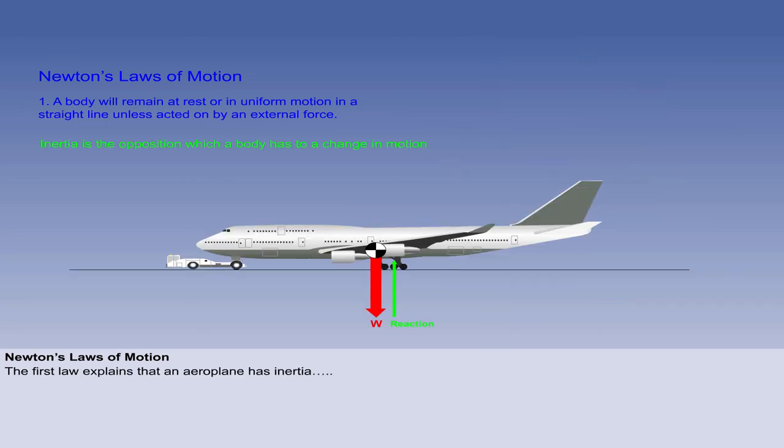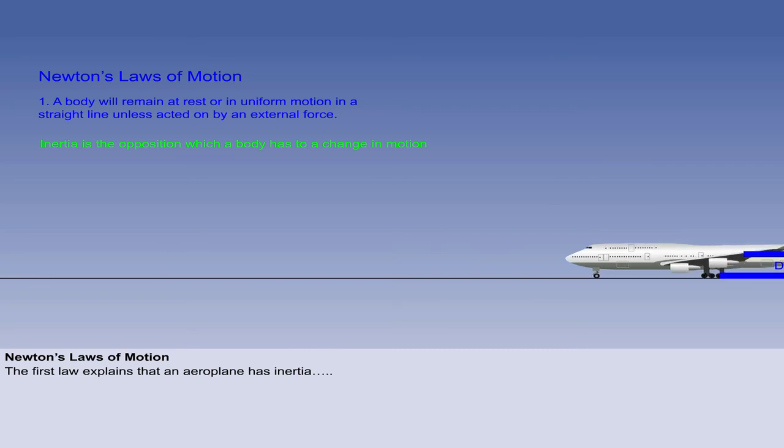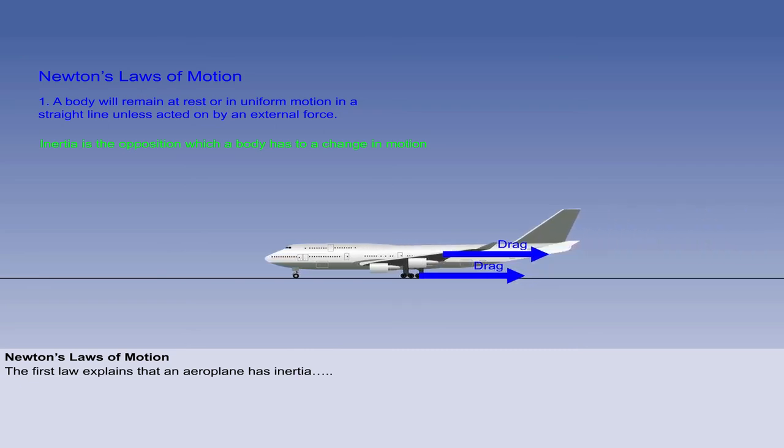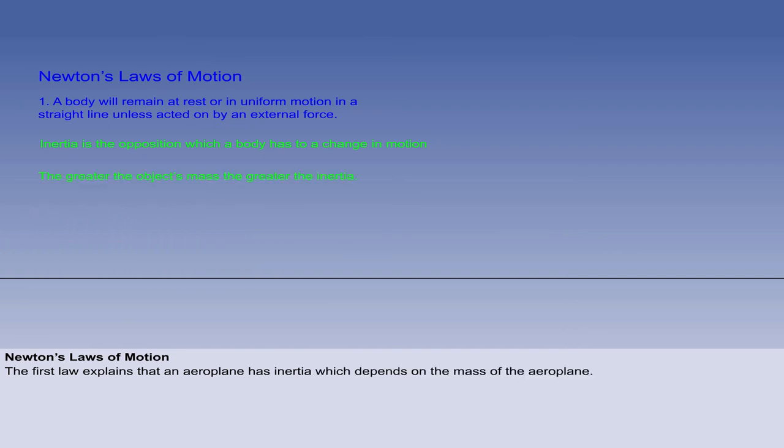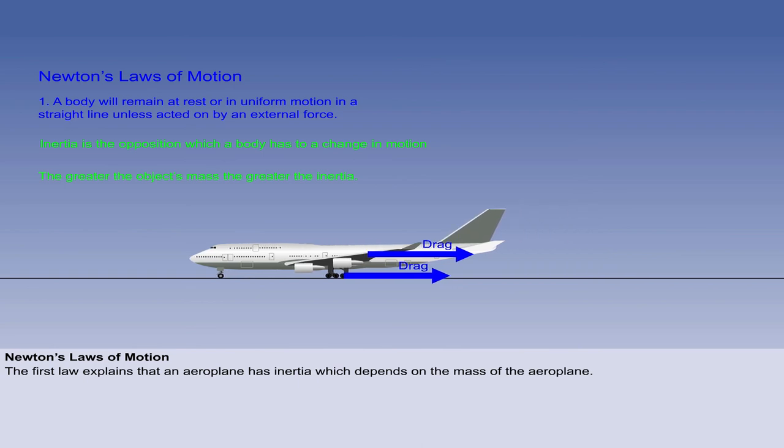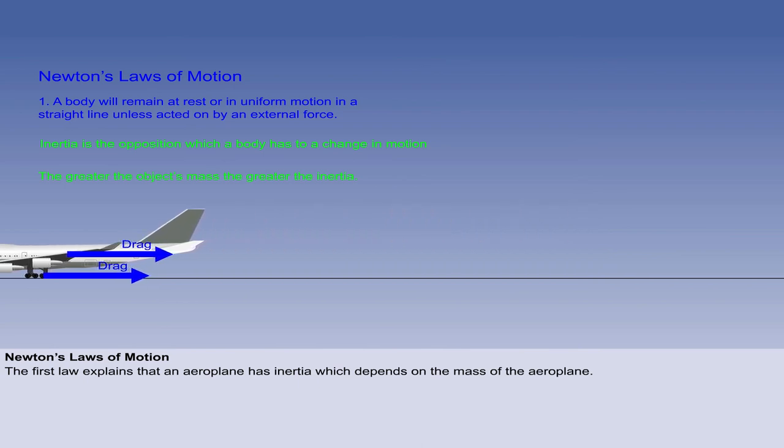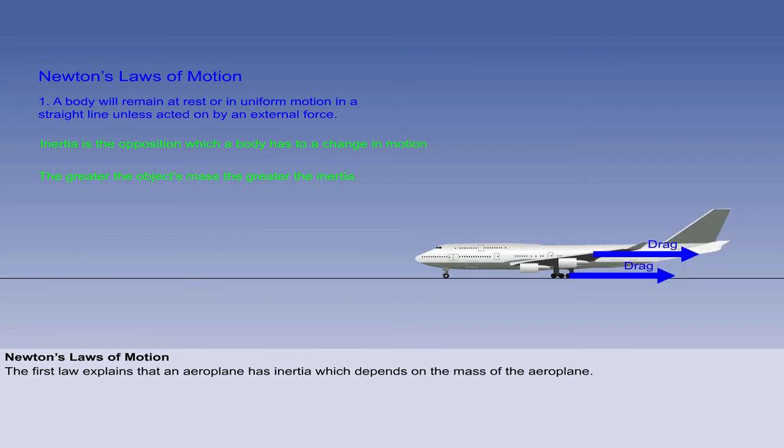Newton's first law helps us to recognise that an aeroplane has inertia. When stationary, it resists moving. And once moving, resists stopping, moving faster or changing direction. The magnitude of this inertia depends on the body's mass, with a heavier object having more inertia. A heavier body is therefore harder to start or stop moving.